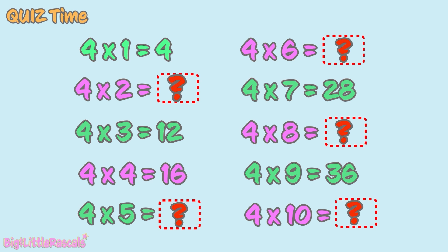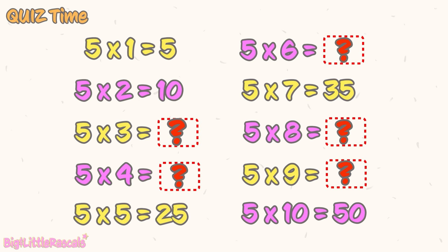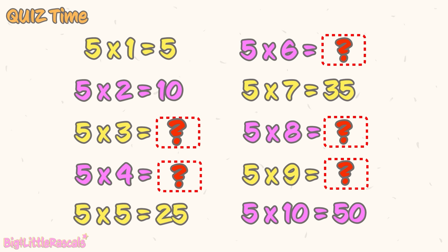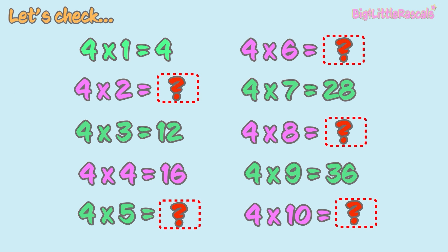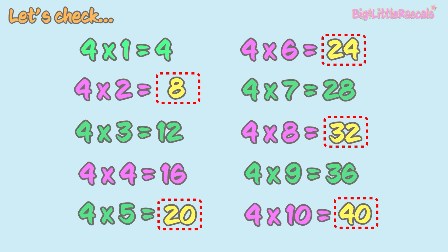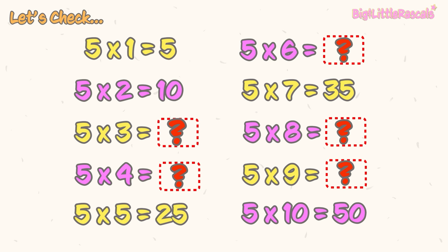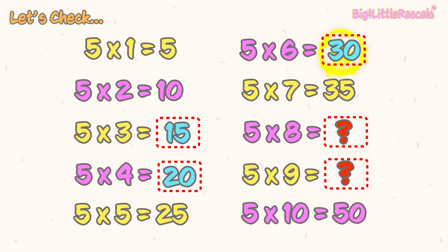Now let's challenge ourselves! Let's visit the multiplication by 4 table — there are empty squares we need to fill with the correct answers. Write down your answers on a piece of paper. Now let's visit the multiplication by 5 table — there are empty squares there too. Write down your answers. Okay, now let's check together. Did you get them all correct? Let's check multiplication by 5 as well — did you get them all correct?